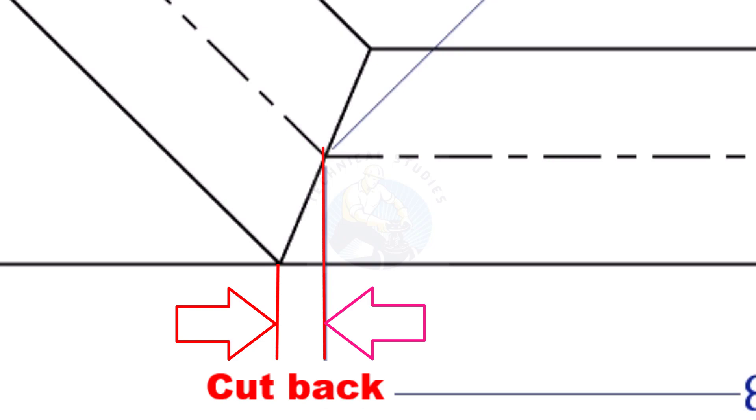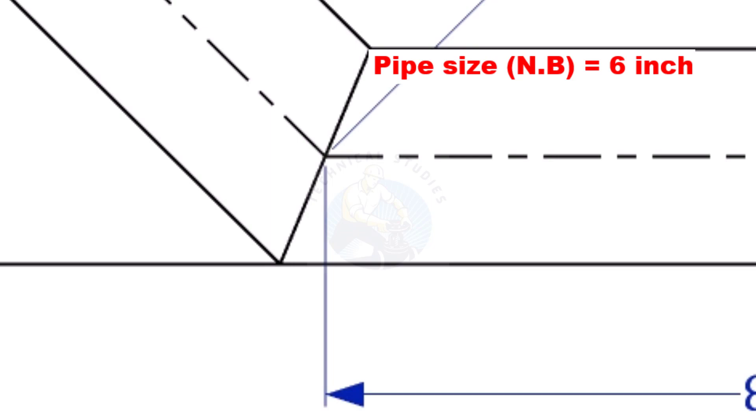To mark a miter cut, we need to know the cutback of the miter. In this offset, the nominal diameter of the pipe is 6 inch.